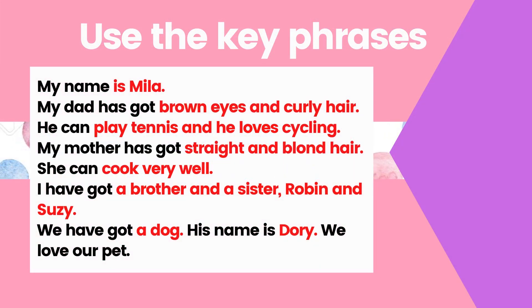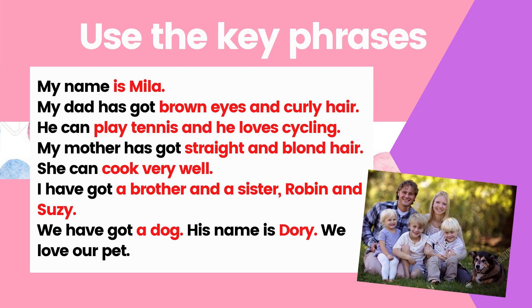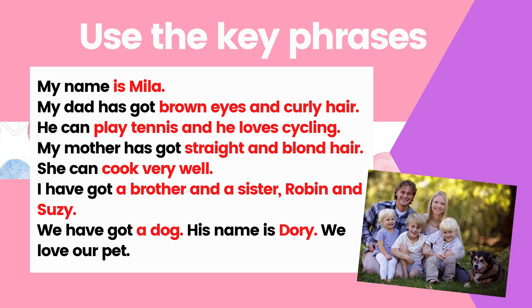Now we are looking at another example on how to use the key phrases. Let's read the paragraph together. My name is Mila. My dad has got brown eyes and curly hair. He can play tennis and he loves cycling. My mother has got straight and blonde hair. She can cook very well. I have got a brother and a sister, Robin and Susie. We have got a dog. His name is Dory. We love our pet.